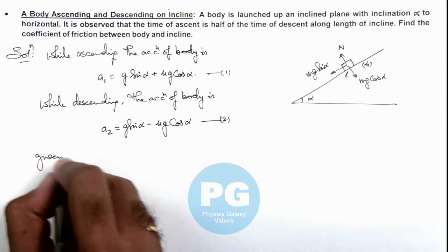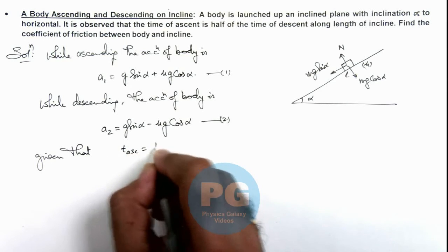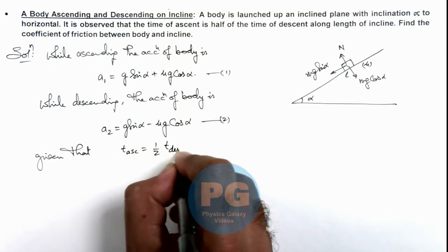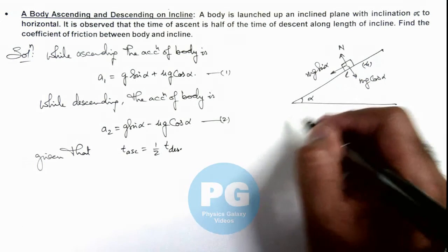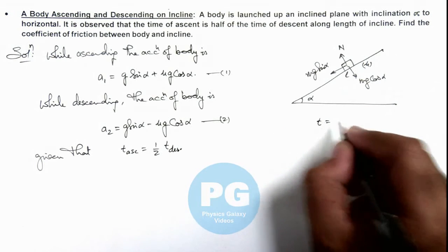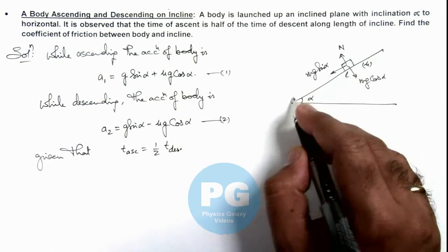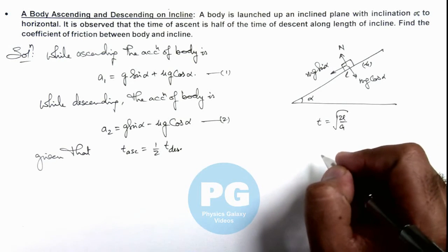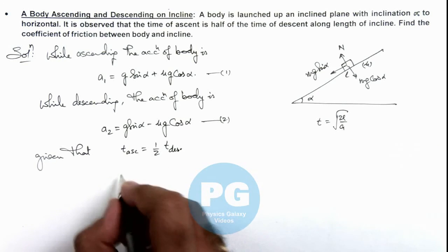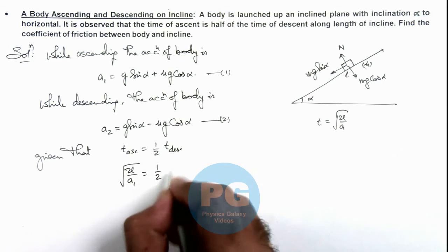We are given that time of ascent is half of the time of descent. And for an incline of length l we can always write the time to cover a length l—if either initial speed is zero or final speed is zero—it can be written as root 2l by a. So time of ascent we can write root 2l by a₁ which is equal to half of time of descent root 2l by a₂.